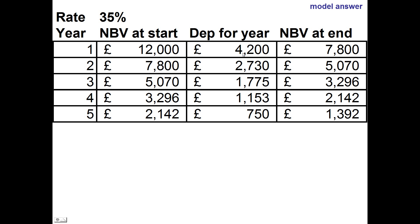Bring that down to year three, find the depreciation for year three, and take it away to get the net book value at the end of year three, and so on. You keep going. With this method in a table like this, if you don't get the correct depreciation from year one — which is 4,200 — that's going to affect the net book value, which affects the balance at the start of year two, then the depreciation for year two, and the net book value. So if you make a mistake from the beginning, everything's going to be wrong.